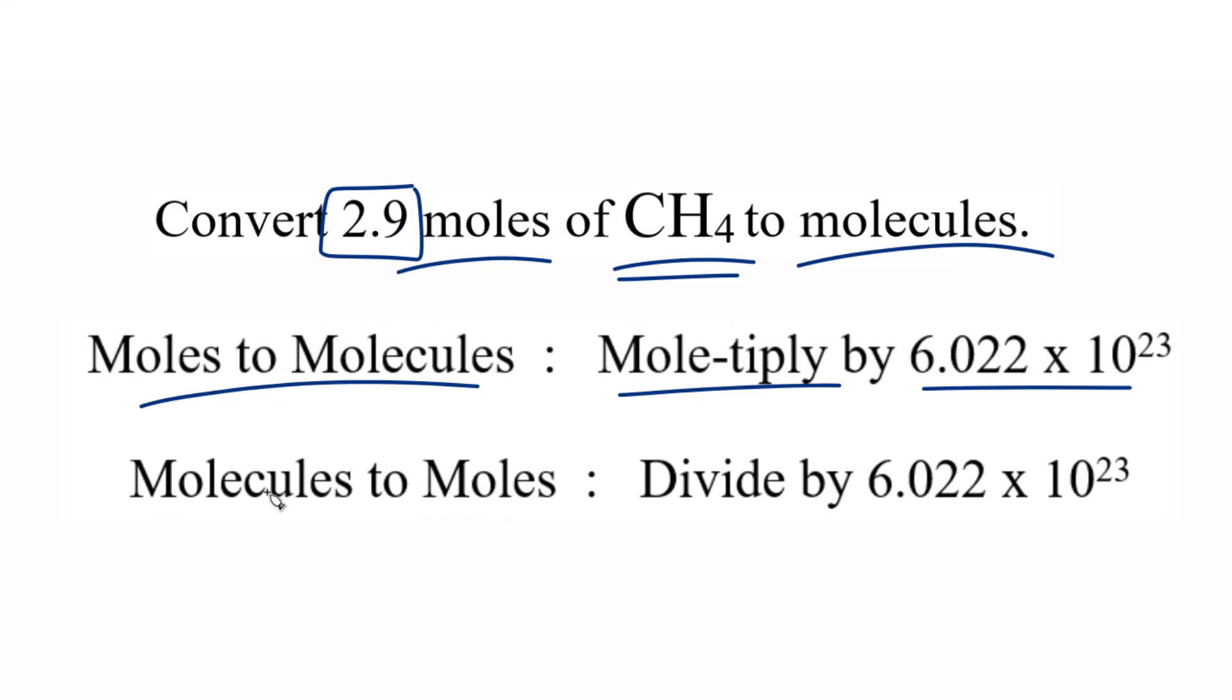If we went the reverse, starting with molecules and wanting moles, we just divide. That's really useful. We're going to take our 2.9 moles, and since we're going to molecules, moles to molecules, we're going to multiply by Avogadro's number.